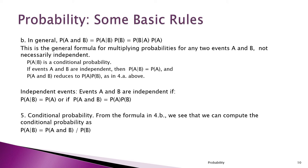The two formulas for multiplication are not different at all — they're exactly the same. It all depends on whether the events are independent or not. We can also use these formulas to prove independence. If the conditional probability of A given B is not equal to the simple probability of A, then the events are not independent, because knowing something about B would change the probability that A occurs.